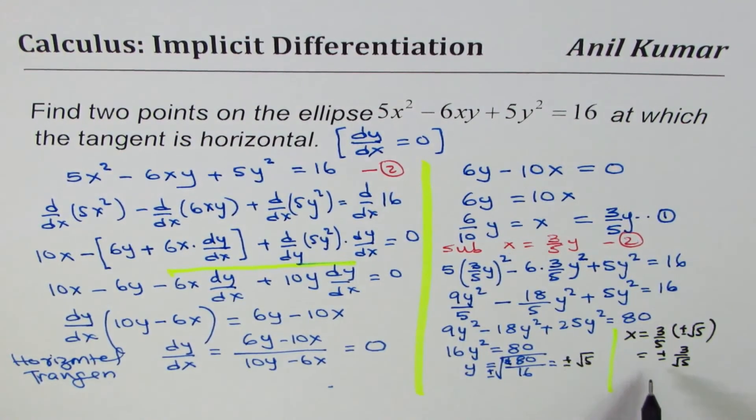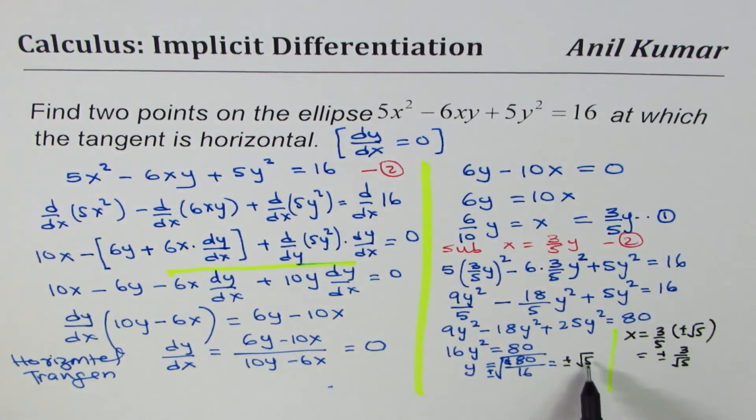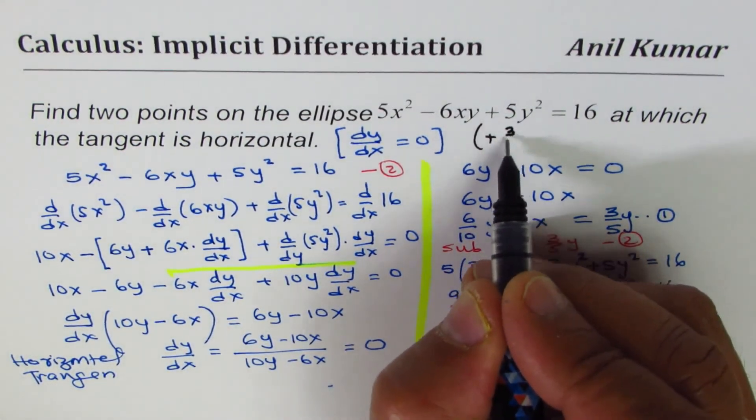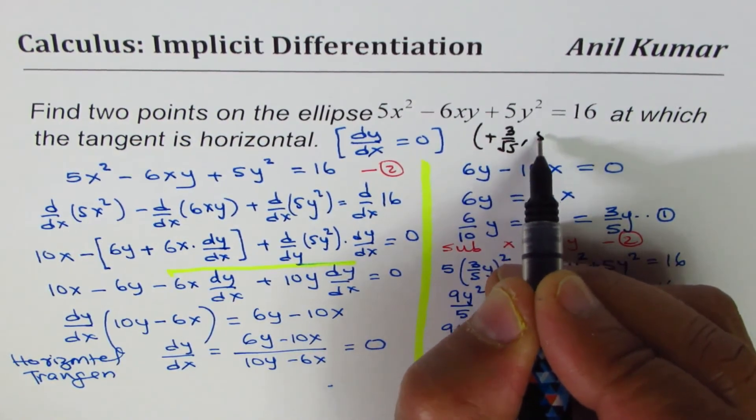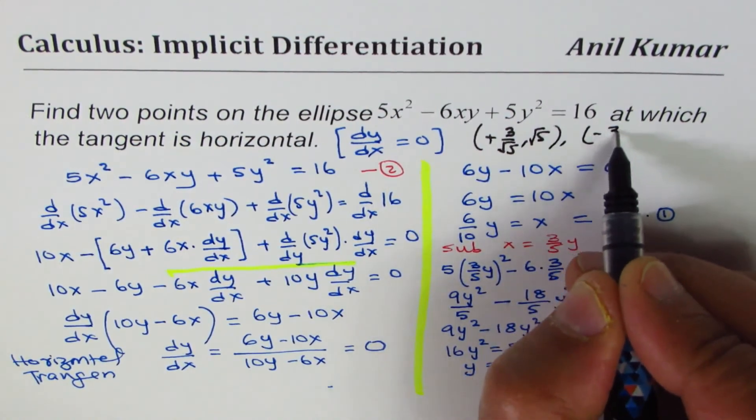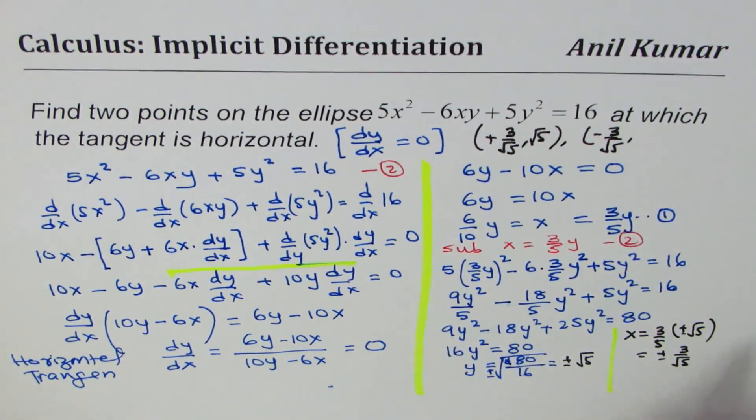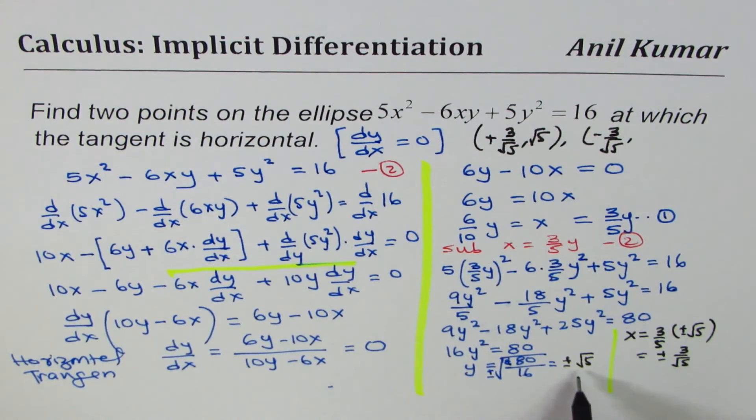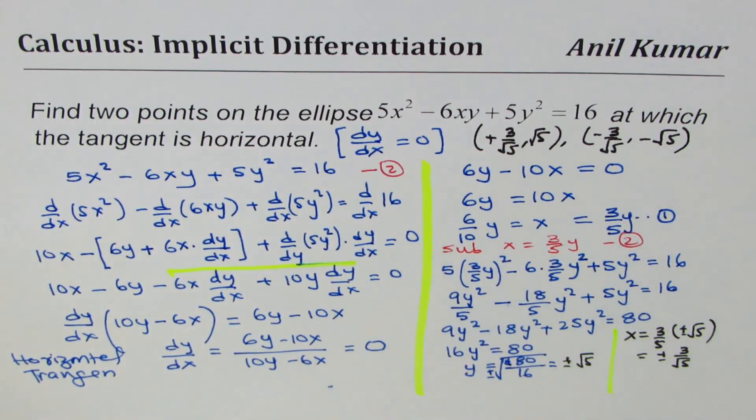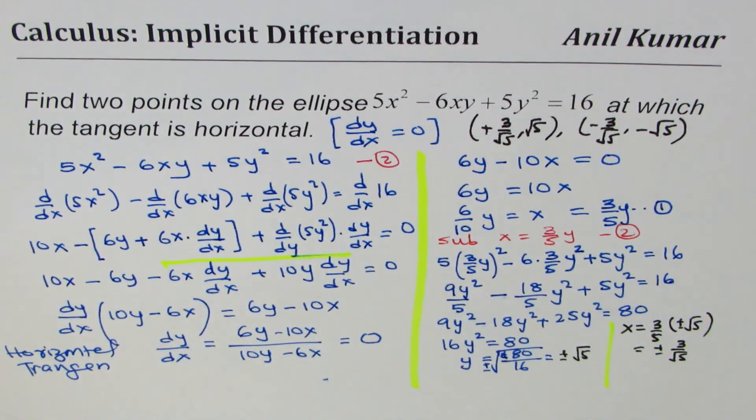And therefore, we have two points. If square root of 5 is positive, so one point is plus 3 over square root of 5 for positive square root. And the other one is minus 3 over square root of 5 for negative square root of 5, y value. So these are the two points at which the slope of the tangent to the given curve is going to be 0, horizontal.